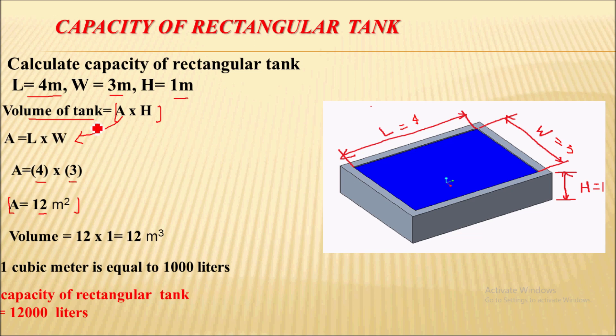So the volume of the tank is equal to area which is 12. And we have provided with the height that is 1 meter. So into 1, 12 into 1, we will get 12 meter cube. So 12 meter cube is the maximum capacity of this rectangular tank.